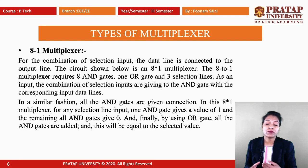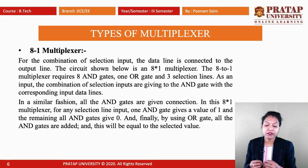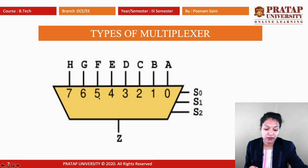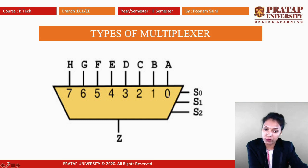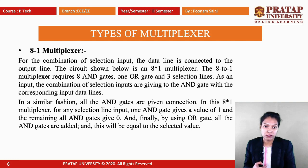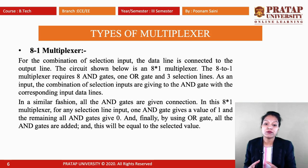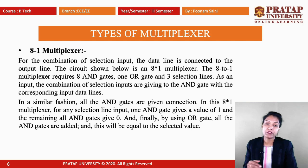The combination of selection inputs is given to each AND gate along with the corresponding input data lines. For any selection input, one AND gate gives a value of 1 while all remaining AND gates give 0. When one gate is active it outputs 1, and all others output 0. Finally, the OR gate adds all the AND gate outputs, and the result equals the selected input value.